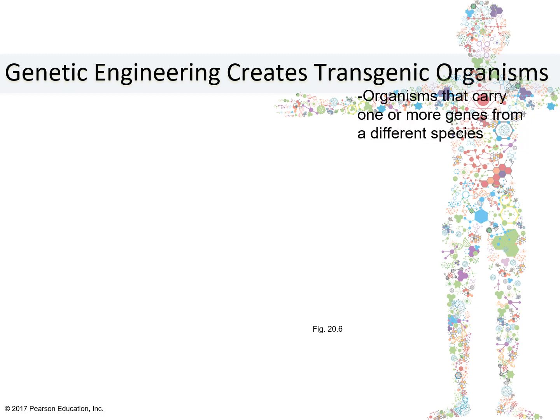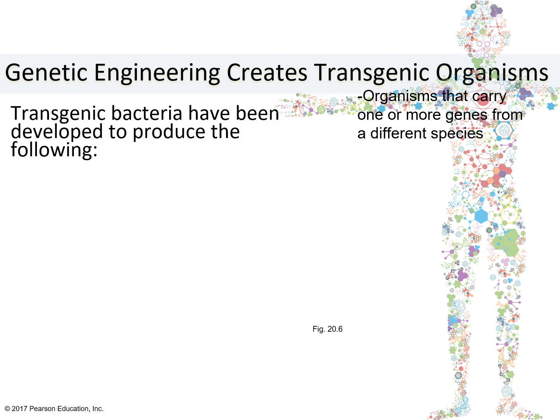Transgenic organisms are organisms produced through genetic engineering that carry one or more genes from a different species. This includes plants and animals; however, bacteria have become the go-to organism of the genetic engineering industry. One reason is that they readily take up plasmids containing foreign DNA, and another is that their reproduction cycles are short, meaning by continuously reproducing the transgenic bacteria, you could have an unlimited supply of the desired protein.